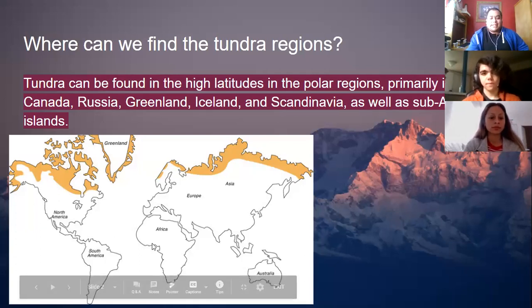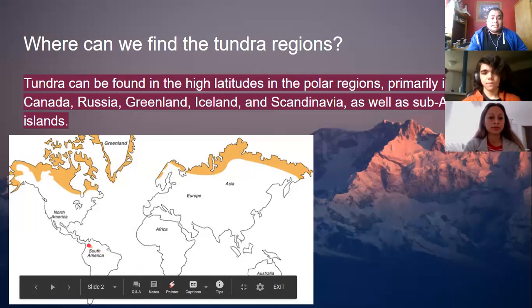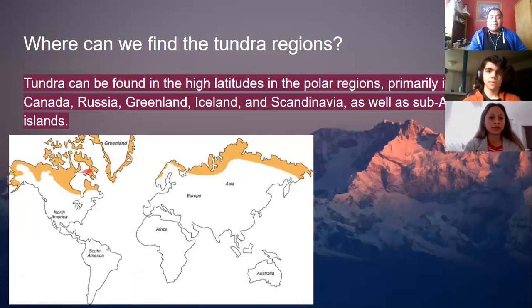You will see in this image here, the ones highlighted in yellow in the map — those are the regions where we can find Tundra.